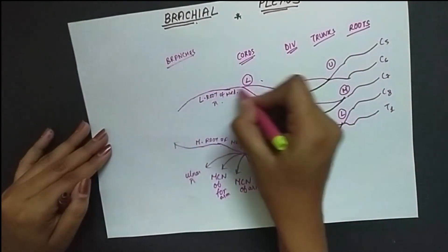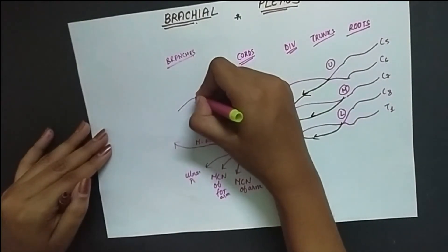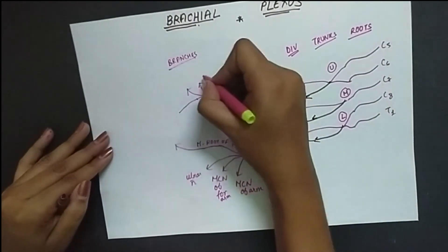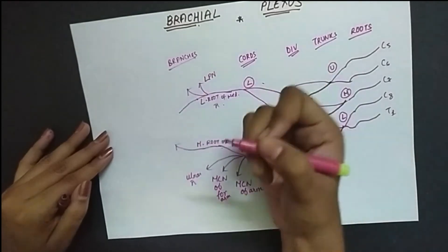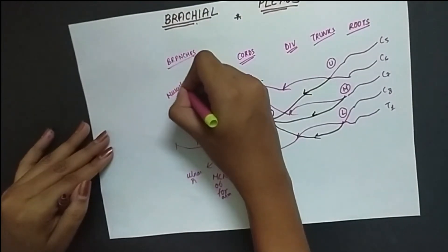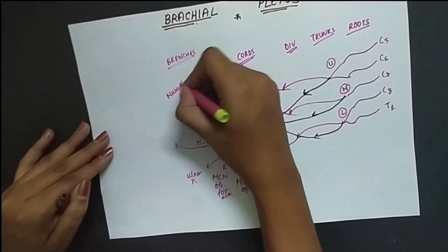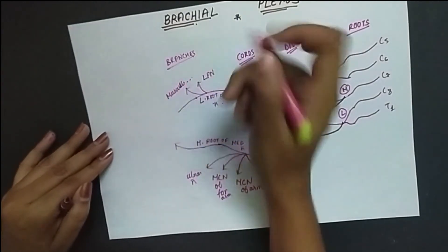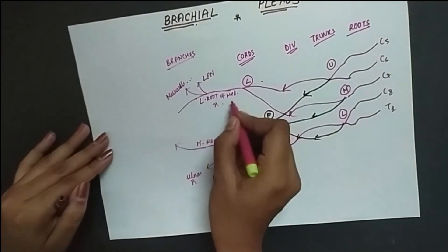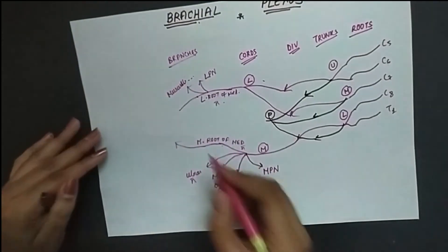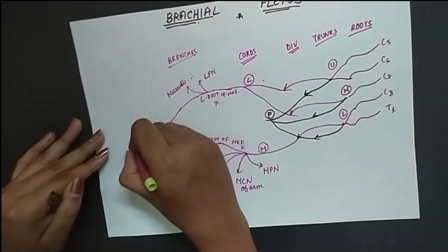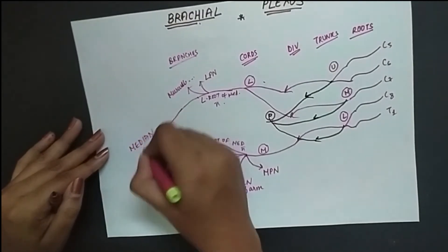The lateral cord has three branches: the lateral pectoral nerve, the musculocutaneous nerve, and the lateral root of the median nerve. The lateral root and the medial root of the median nerve join together to form the median nerve.